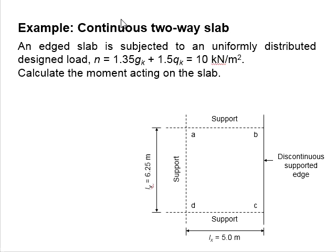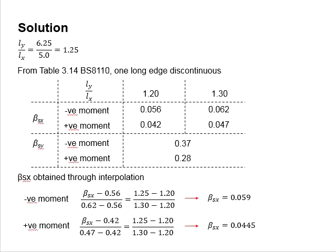You may pause the video for a while to work out the solution. To calculate the moment of the slab, first you need to obtain the coefficients from Table 3.14 BS8110. To do that, you need to find Ly over Lx, which is determined by dividing Ly by Lx. It is obtained to be 1.25.